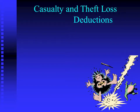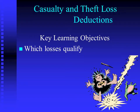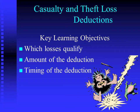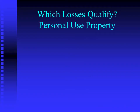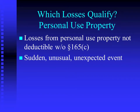Casualty and theft loss deductions. Our first question is what is a casualty? We'll discuss what losses qualify as casualty losses. And remember, if we're talking about personal use property, we're talking about overriding the general rule that says you do not get to recognize losses from dispositions of your personal stuff. You need a sudden, unusual, and unexpected event to have a casualty.